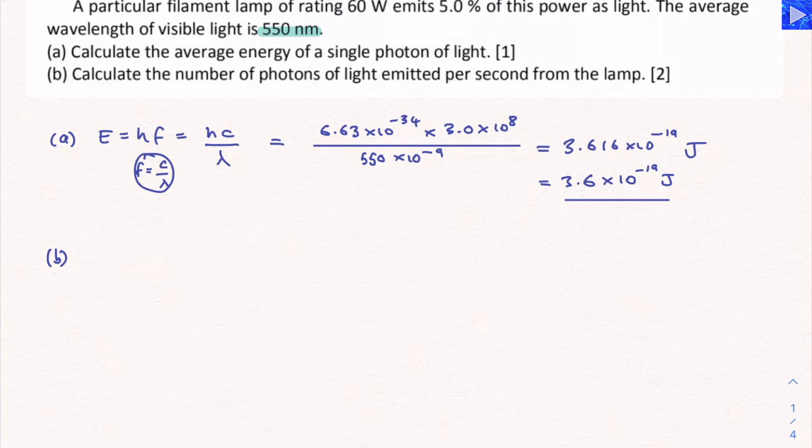Part B says, calculate the number of photons of light emitted per second from the lamp. What it's actually asking us for is number per unit time. N over t is what I'm going to be looking for. Let's see if we can find that when we start writing down some equations and doing simultaneous equations for them.